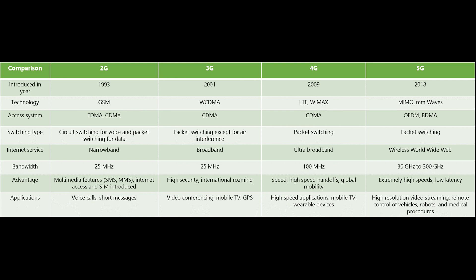Then we had 4G. The technologies that made 4G possible were Multiple Input Multiple Output (MIMO) and Orthogonal Frequency Division Multiplexing (OFDM). The most important 4G standards are WiMAX and LTE, capable of delivering a very fast and secure internet connection.